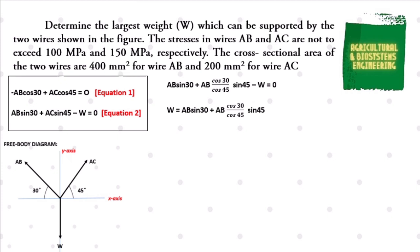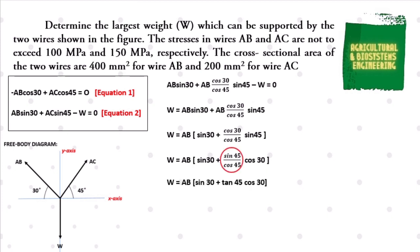On the right side, we extract AB and get W equals AB multiplied by sine 30 plus cosine 30 all over cosine 45, times sine 45. This simplifies to W equals AB multiplied by sine 30 plus sine 45 all over cosine 45, times cosine 30. Since sine over cosine is tangent, W equals AB multiplied by sine 30 plus tangent 45 times cosine 30. Dividing both sides gives AB equals W all over sine 30 plus tangent 45 times cosine 30.